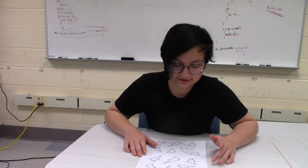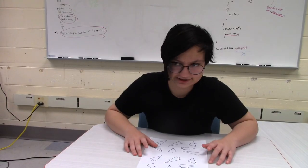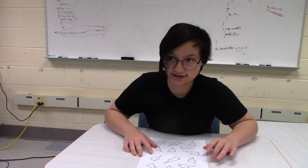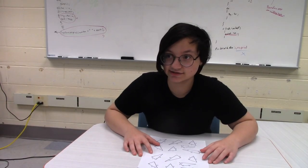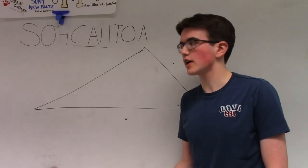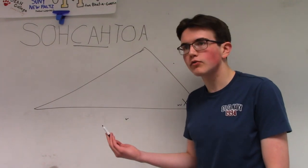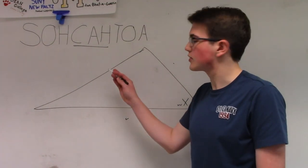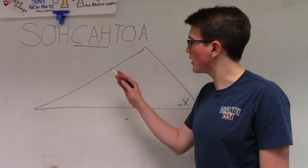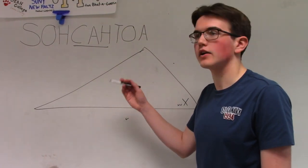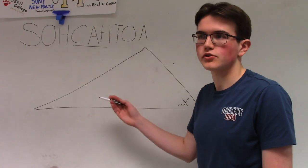Oh, then 96 over 16 is 6? Exactly. So I think we've covered SOH-CAH-TOA. I think we can move on to special right triangles.